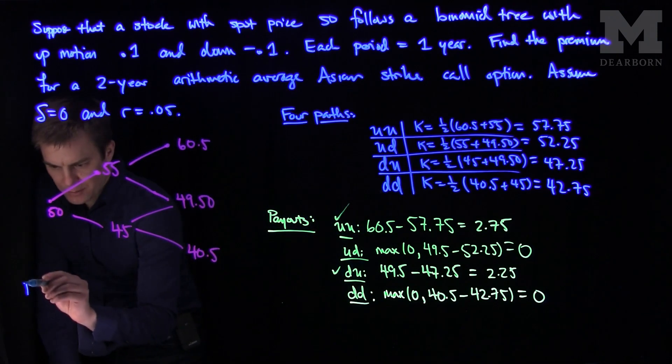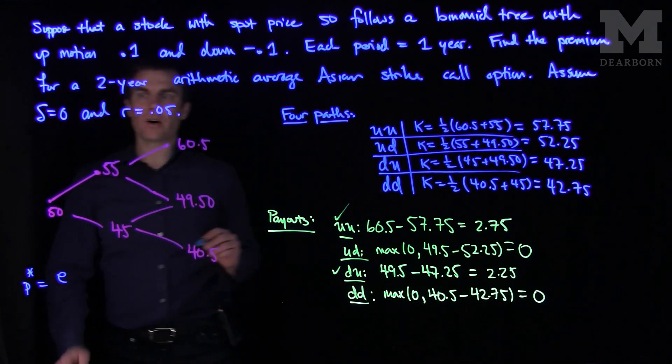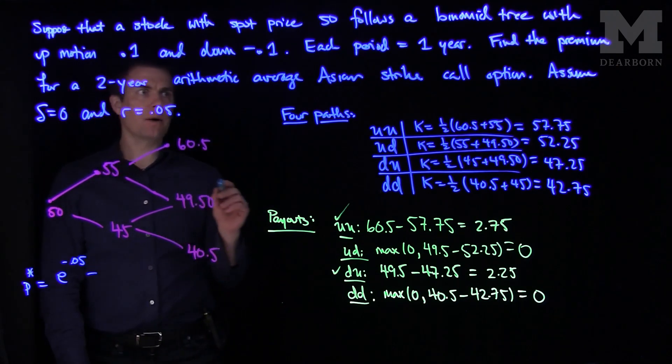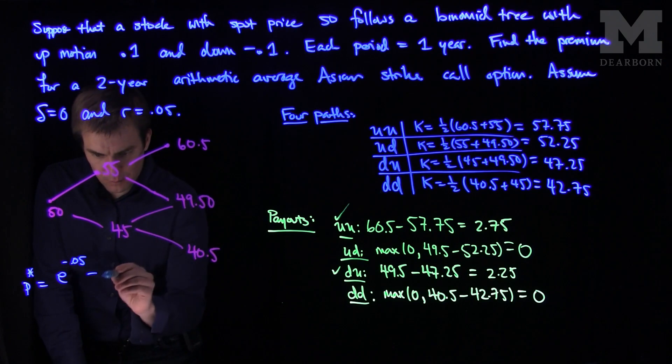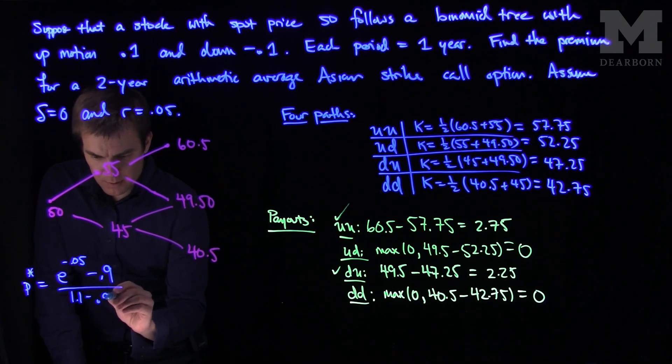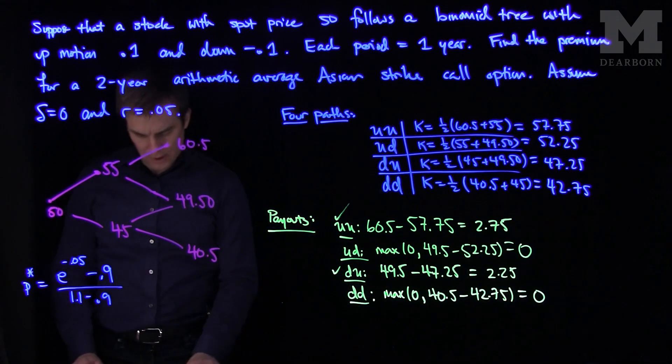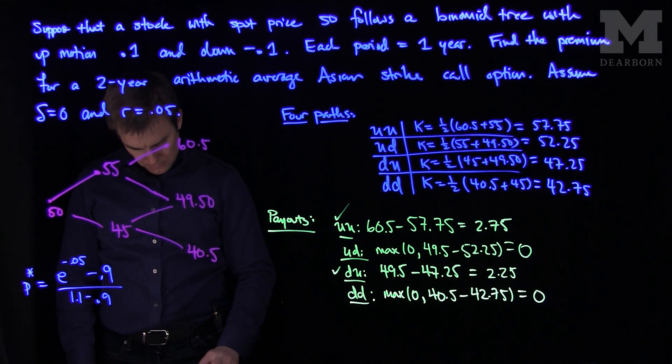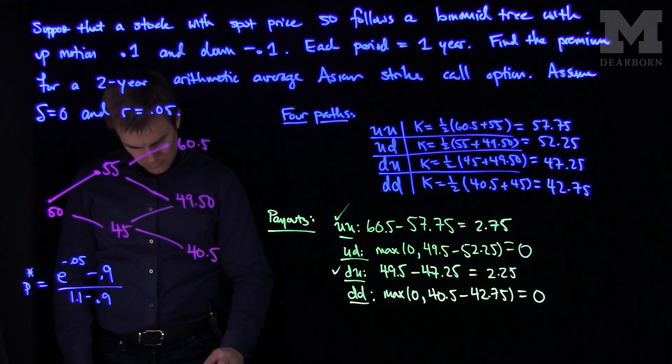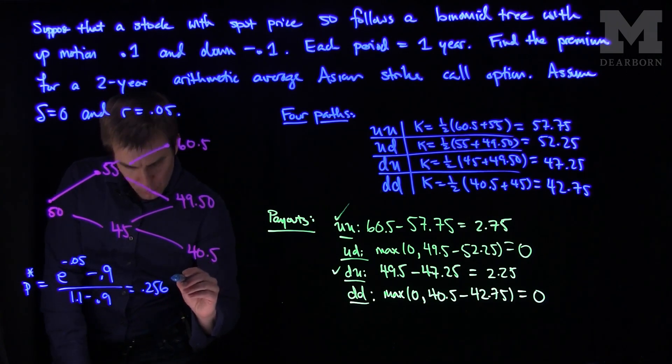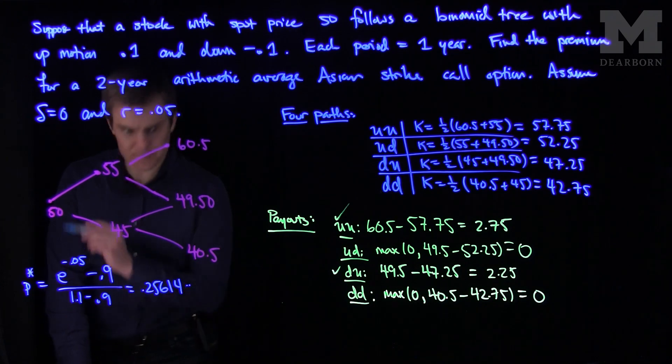So what will p-star be in this problem? So p-star in this problem will be e to the r, which is 0.05, minus the down-rate, which is going to be 0.9, because you're going down by 90%, and then 1.1 minus 0.9. So we can tabulate this value and see what we get. So this value over here will be 0.256147, etc. That's my p-star.